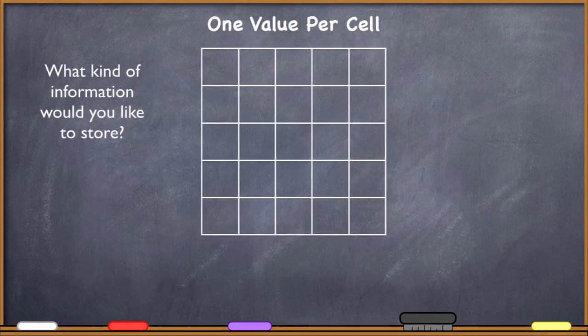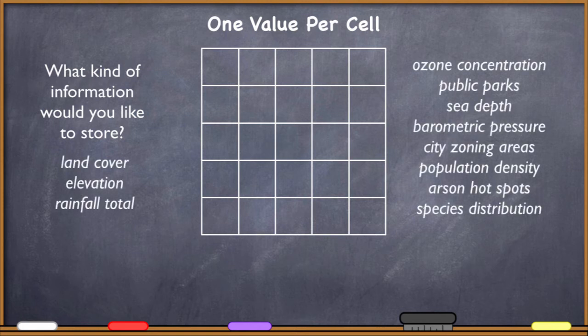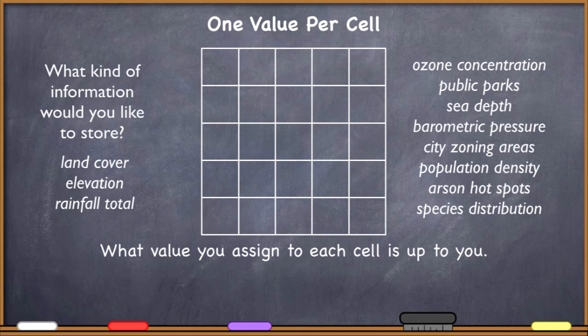So if we have this simplified raster right here, one value per cell, then what kind of information would you like to store in that raster? Well, we can use it to store all kinds of information. Do you want to store information about land cover, or elevation, or rainfall, or the depths of the sea, or ozone concentrations, or population density, or whatever? We can represent all kinds of geographic phenomena using the raster data model. So you choose what you're interested in representing, and then what value you assign to each cell is up to you. Now you're probably going to determine some methodology you want the computer to execute in order to assign values to all of these thousands and thousands of cells. But the value you assign and how you do that is up to you.